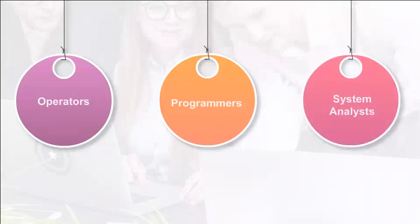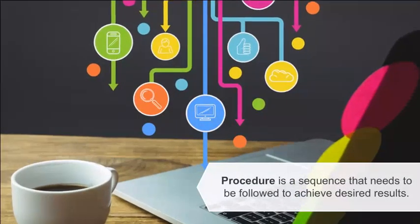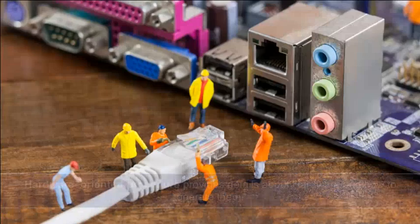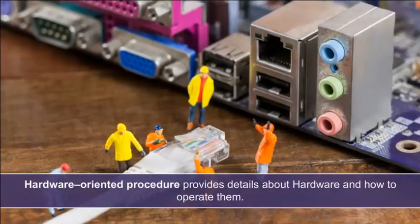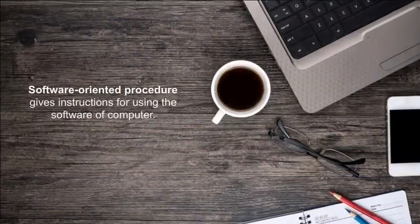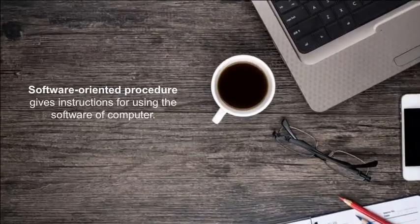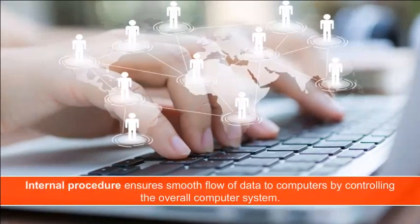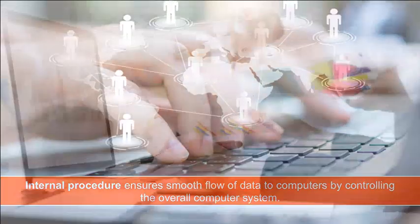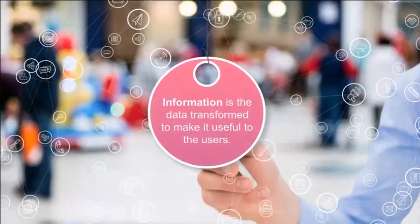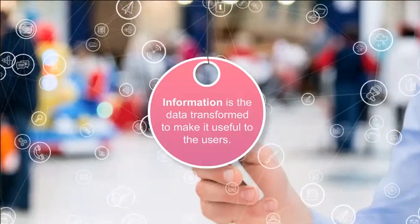Humanware can include operators, programmers, and system analysts. Procedure is a sequence that needs to be followed to achieve desired results. There are three types: Hardware-oriented procedure, which provides details about hardware and how to operate it; Software-oriented procedure, which gives instructions for using software; and Internal procedure, which ensures smooth flow of data by controlling the overall computer system. Data is the raw facts and figures used by the computer, while information is data transformed to make it useful to users.